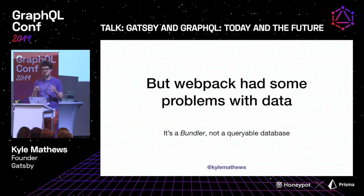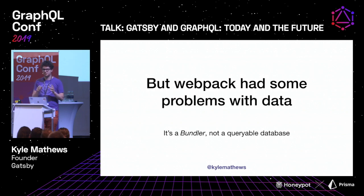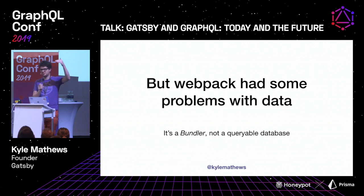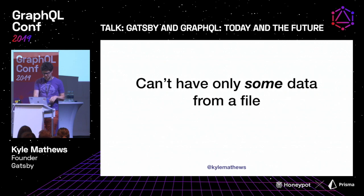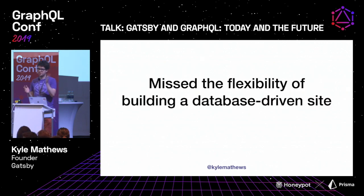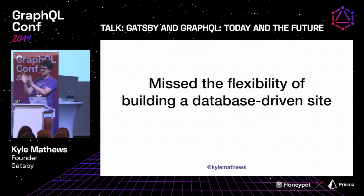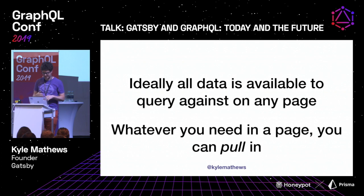One limitation was using Webpack. Webpack thinks in files, not in data. We could add support for more file types, but there was no way to pull partial data. An easy example: say you wanted to build a page from a CSV file that's 500 megabytes. There's no way to say 'I just want the first hundred rows.' Also, the push model — where you have data and push it through a template — is not as flexible. It's really hard to build index pages pulling data from different parts of your data store.